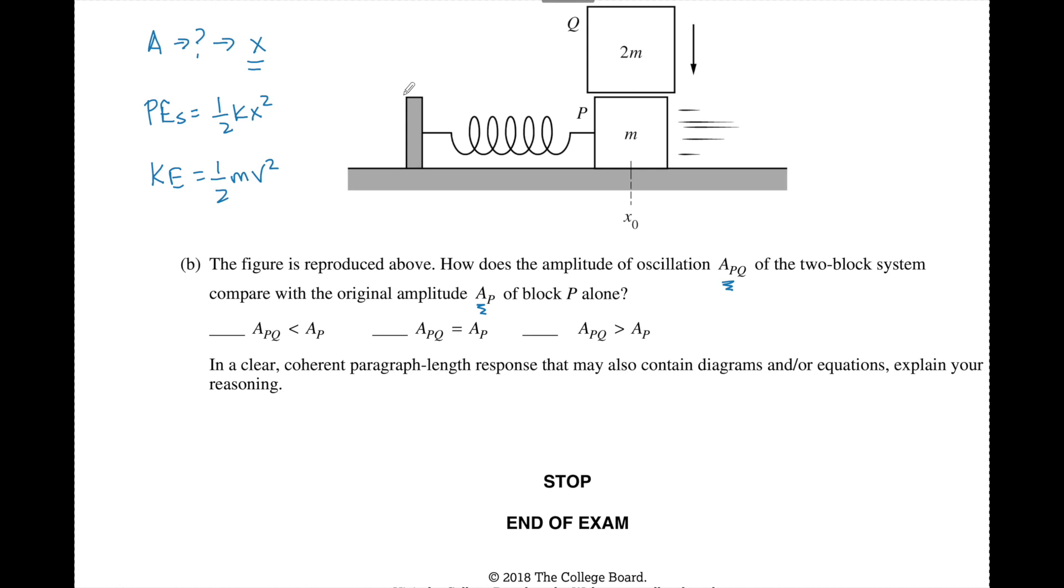So we essentially see a two-part system that's going to happen where when I drop this block on something is probably going to happen to v and this is going to change KE which is going to then change PE which is then in turn going to change x. And that's what I want to describe inside a paragraph length response and these are the equations I'm going to use.